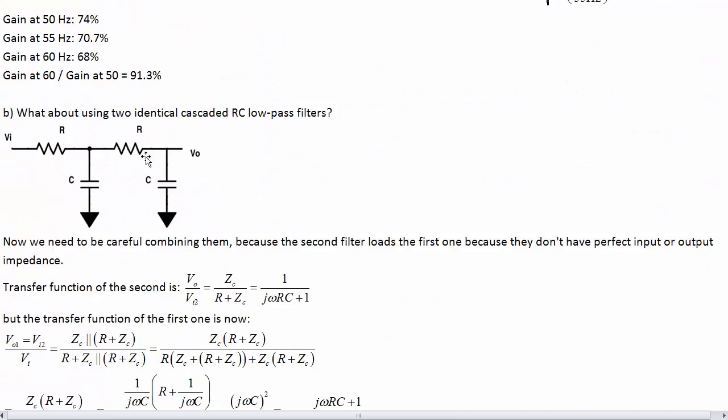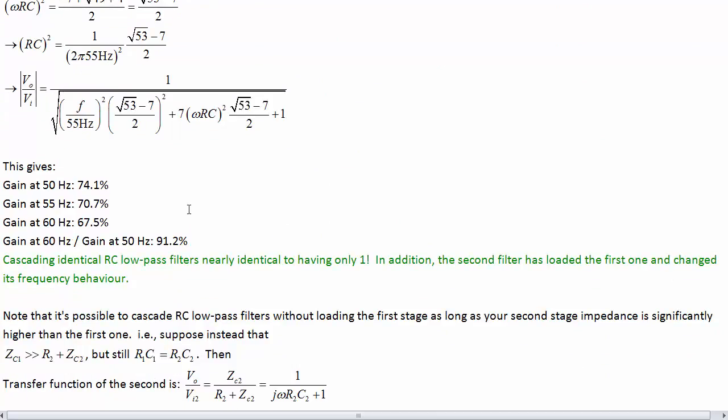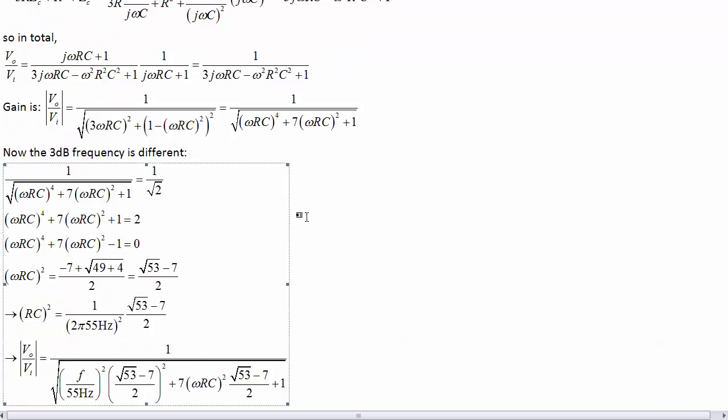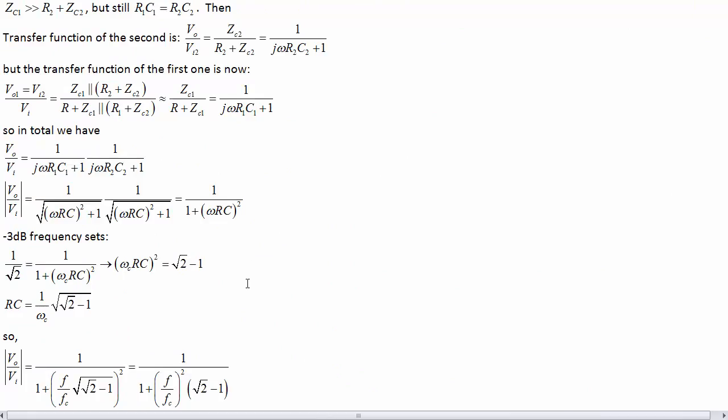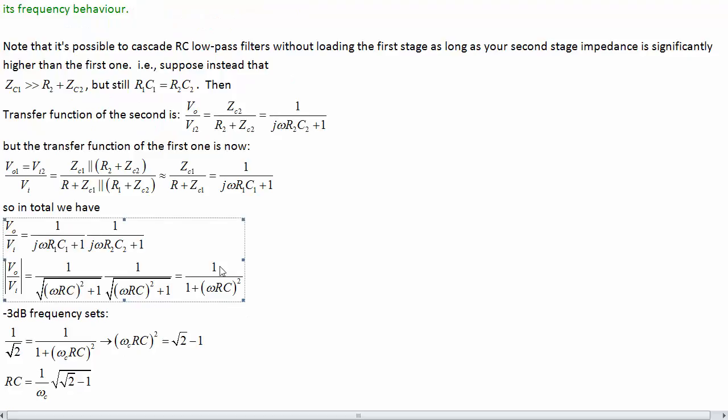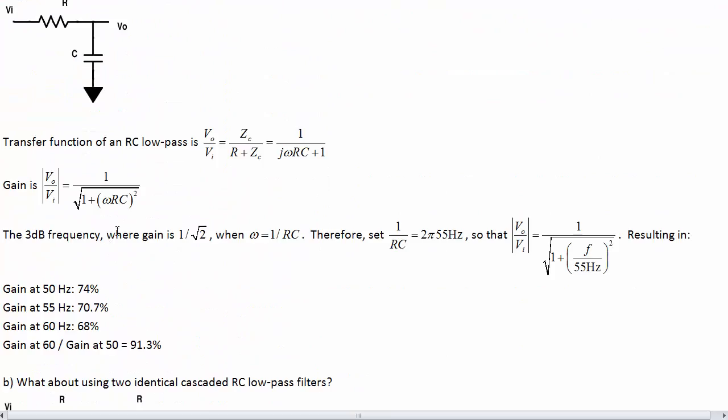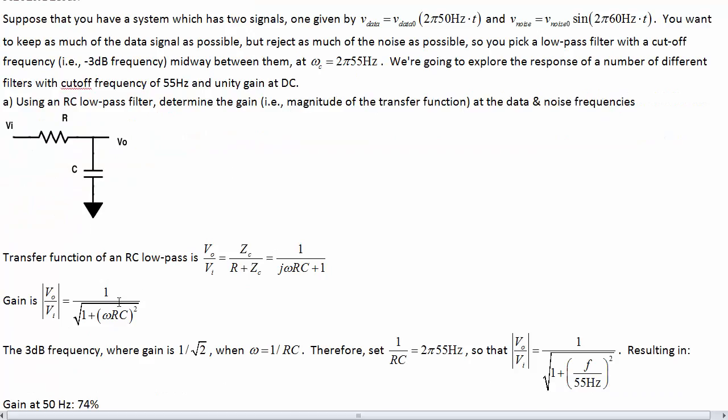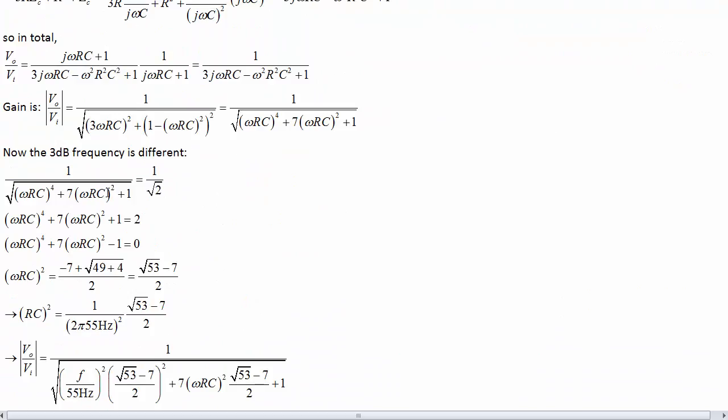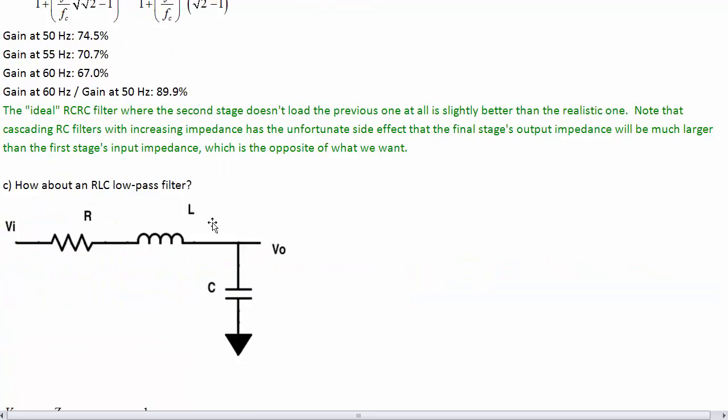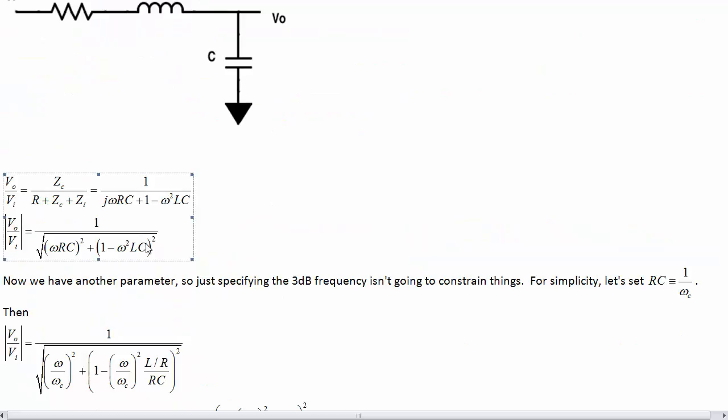You can look at some of the filters we've been dealing with before and see how they compare. So, this cascaded RC filter, for instance, had a transfer function that went kind of like 1 over root of omega to the 4th. So, this is a second-order filter. And so was the ideal RC filter, 1 over 1 plus omega squared. So, that's going to go like 1 over omega squared, second-order filter. The regular RC non-cascaded is a first-order.